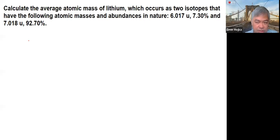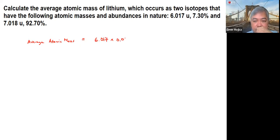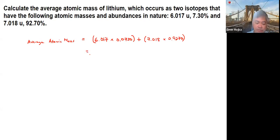So the average atomic mass equals: 6.017 times 0.0730, plus 7.018 times 0.9270. For the first term, I get around 0.392.